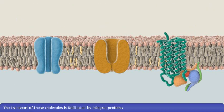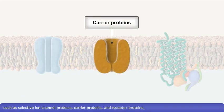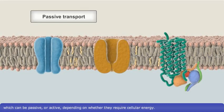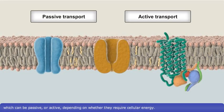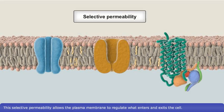The transport of these molecules is facilitated by integral proteins such as selective ion channel proteins, carrier proteins, and receptor proteins, which can be passive or active, depending on whether they require cellular energy. This selective permeability allows the plasma membrane to regulate what enters and exits the cell.